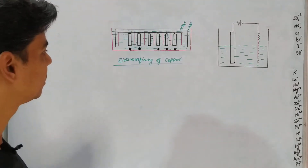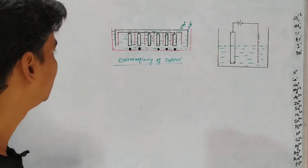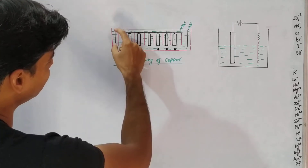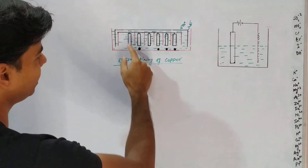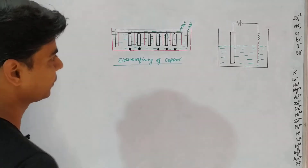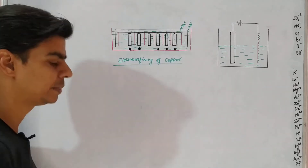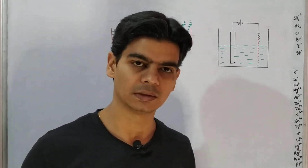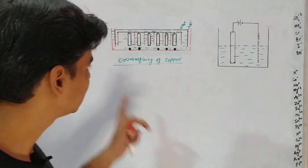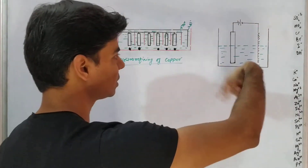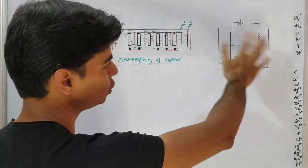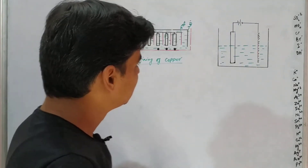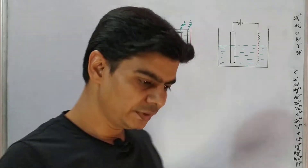This is the arrangement for electro refining of copper. In this arrangement, the red lines represent pure strips of copper, and the black blocks represent the impure metal that we need to purify. I'll try to show you what we are doing here in a simplified manner.